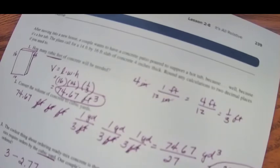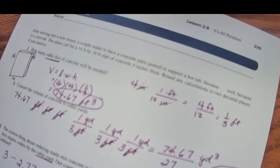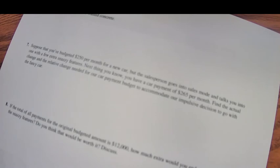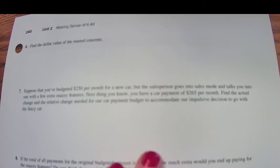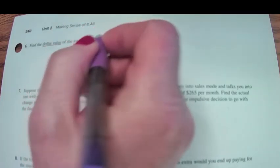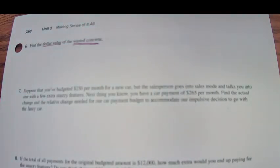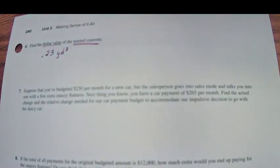As you know, they didn't use it all. They paid for a little bit extra concrete that they didn't actually use. Find the dollar value of the wasted concrete. In our previous example, we saw that the amount wasted was 0.23 cubic yards.